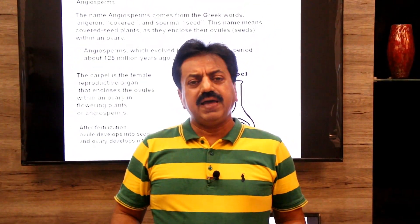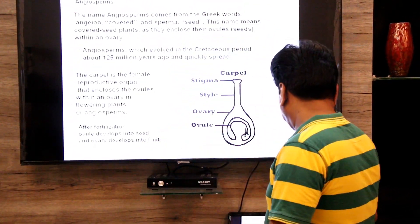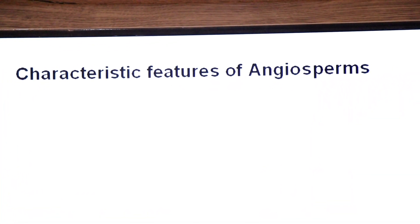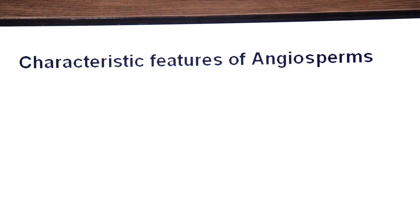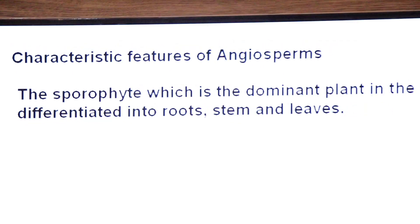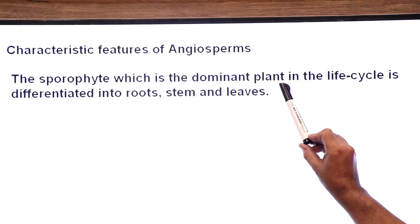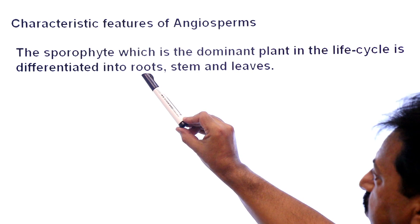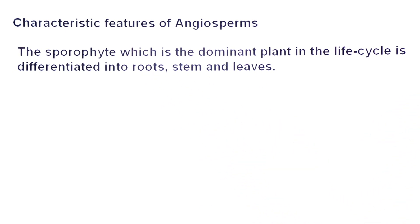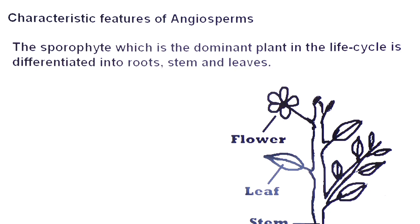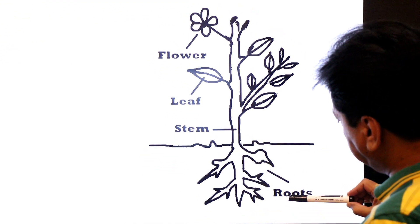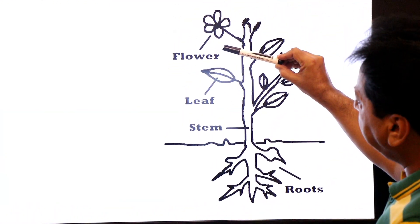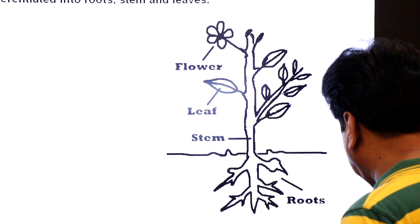Now we will discuss the characteristic features of angiosperms. Their dominant generation or dominant phase is sporophyte. The sporophyte, which is the dominant plant in the life cycle of angiosperms, is differentiated into roots, stem and leaves. Flowers are the reproductive parts of the sporophyte.